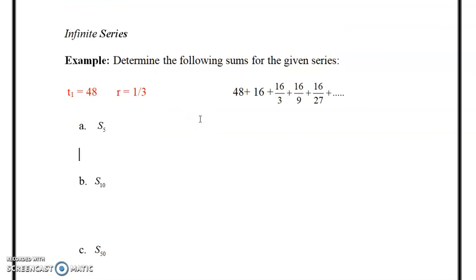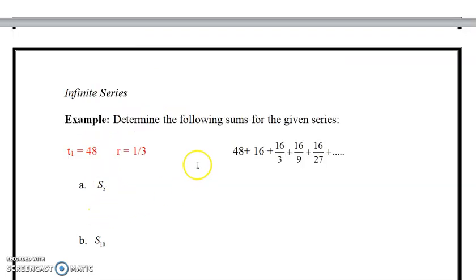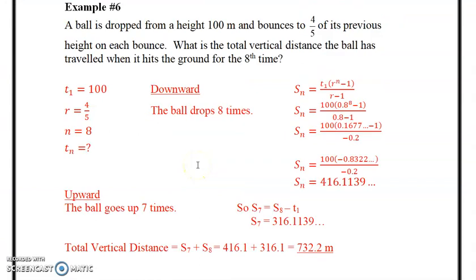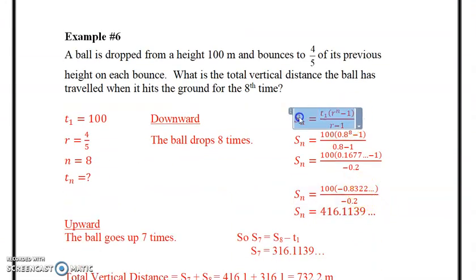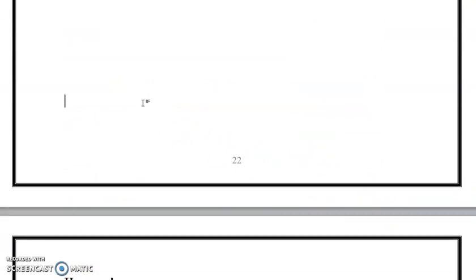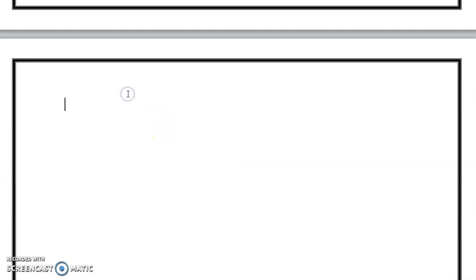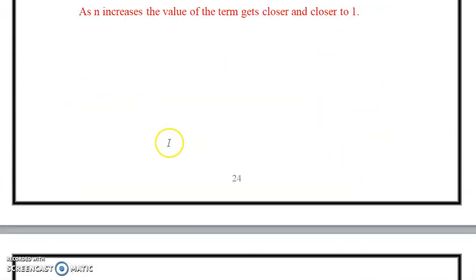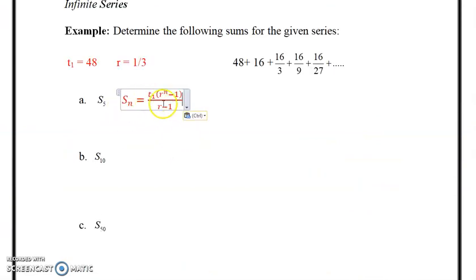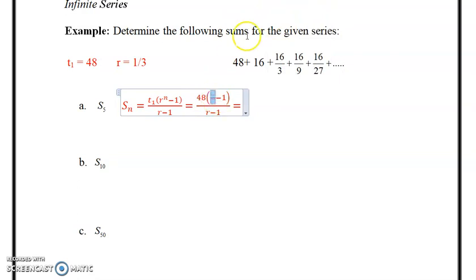We're going to do the sum formulas, so I'm going to go get the sum formula for us. We need the one that has the first term and the r value and the n, because we know n is five, ten, fifty here. So we're going to go get that formula from the previous example. Here it is. There's the formula. You can plug in what we know.